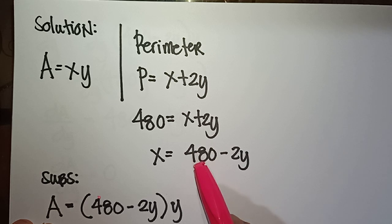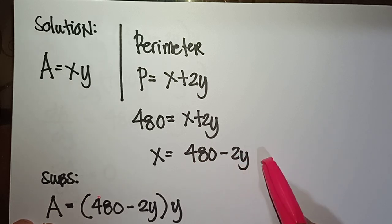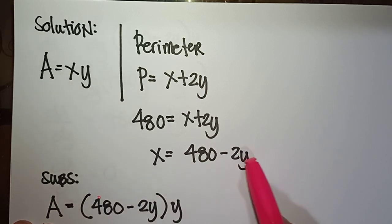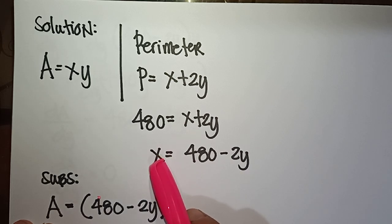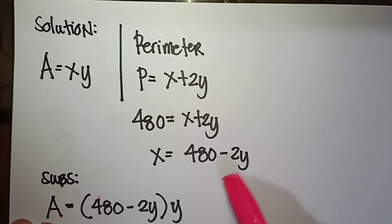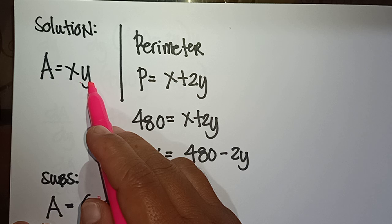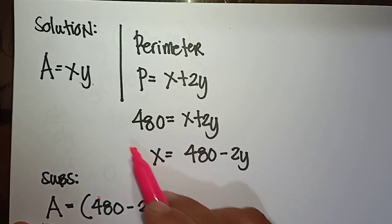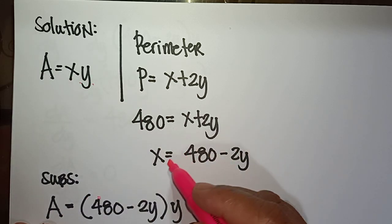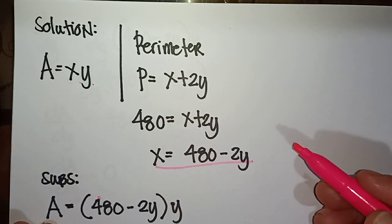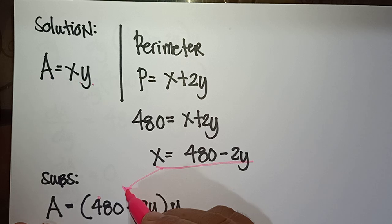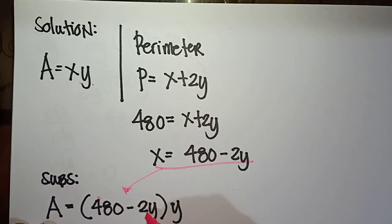Solving for x gives x = 480 − 2y. Substituting this into the area formula: A = x · y = (480 − 2y) · y. This gives us the area as a function of one variable y.